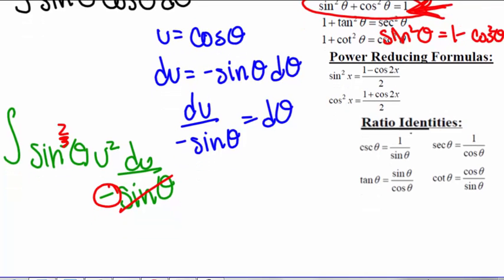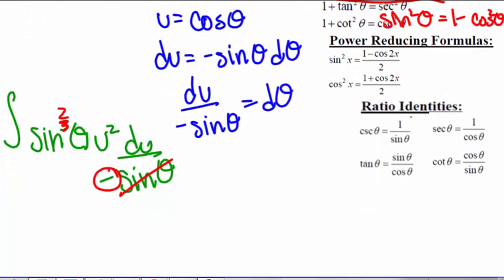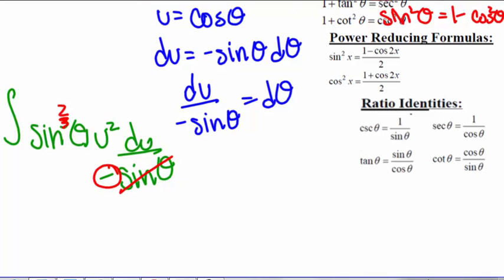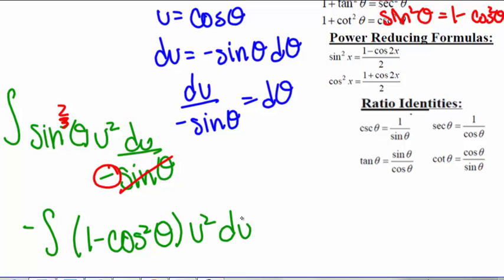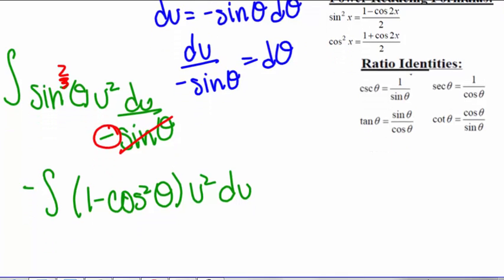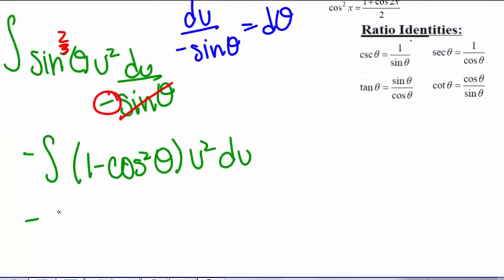To get this in terms of cosine which we can then get in terms of u. So we have negative integral of the quantity 1 minus cosine squared theta times u squared du. And cosine is u, so we have negative integral of 1 minus u squared times u squared du.